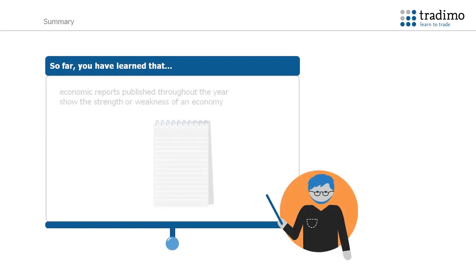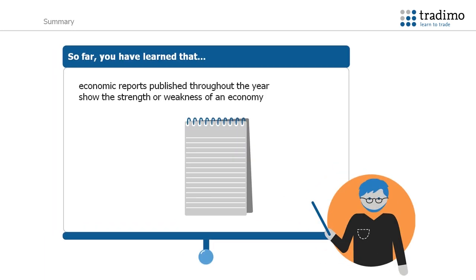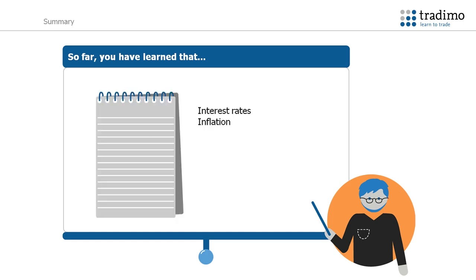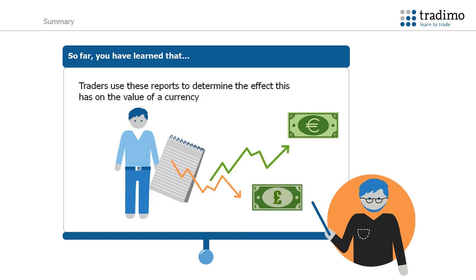So far, you have learned that economic reports measure how strong an economy is, and are published throughout the year with publishing times released ahead of time. Interest rates are one of the most important drivers of a currency and can be used as a tool by a central bank to either reduce inflation or stimulate the economy. Inflation measures how quickly the price of goods and services rise, and central banks will try to target an acceptable rate of inflation. Hawkish and dovish refer to how the central bank will manage inflation and growth. Traders use these reports to determine the effect that it has on the value of a currency.